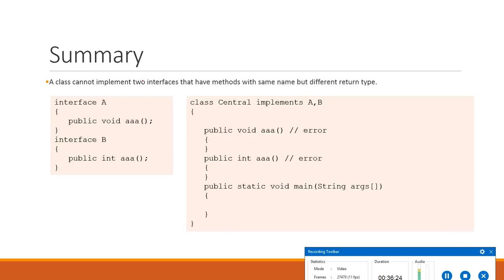A class cannot implement two interfaces that have methods with the same name but different return types — this will cause an error. They must have the same name and the same return type for the class to implement both. For example, if interface A has 'void aaa' and interface B has 'int aaa', a class implementing both and trying to implement both methods will show a compile-time error.